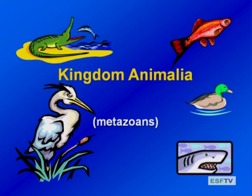All of the zooplankton we're going to talk about subsequently are going to be in the kingdom Animalia. So they're animals like us — they're multicellular, while the ones we just talked about were single-cellular. They're not going to be quite as dramatic as vertebrates; they're going to be invertebrate organisms living in the open water of lakes and ponds and making a living there.